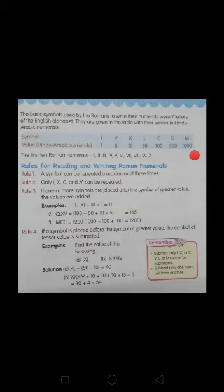In the Roman numeral system, seven letters of the English alphabet are used. Here is a table given which signifies the symbols with their values: I means 1, V means 5, X means 10, L equals 50, C equals 100, D equals 500, and M equals 1000.